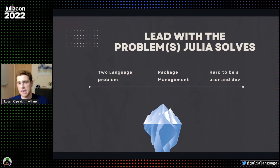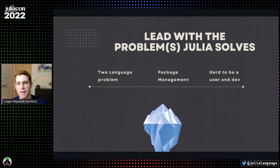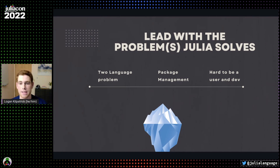Something that's been super successful for me in having these conversations and giving these talks is to lead with some of the problems that Julia actually solves — thinking about the challenges that these developers, engineers, or scientists might actually have. For me, it's talking about the two-language problem, what that is, and how it's relevant to them as an engineer. It's also talking about the package manager, which I think solves a huge headache for folks coming from other ecosystems who don't have a robust package manager with first-class support at the ecosystem level.